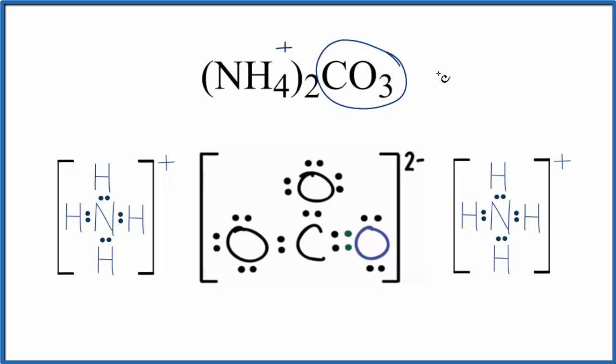CO3, that's the carbonate ion. The whole carbonate ion has a 2 minus ionic charge. So we have two of these positive charges that balances out the 2 minus on the carbonate, giving us NH4)2CO3.